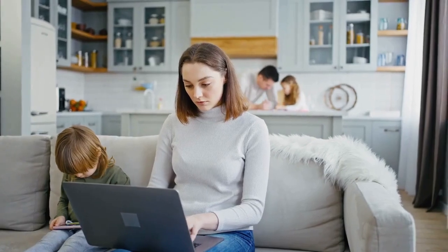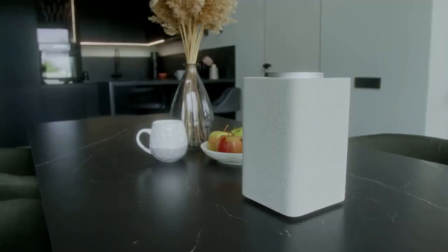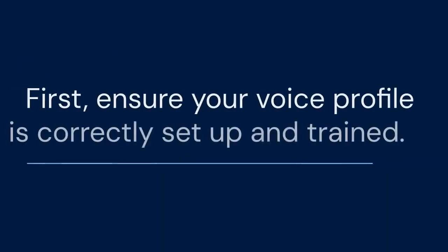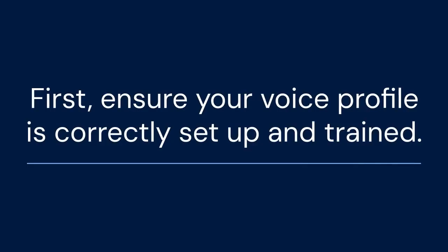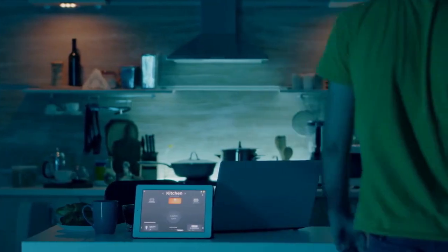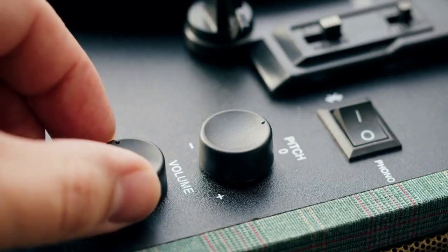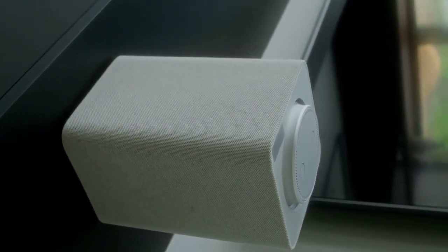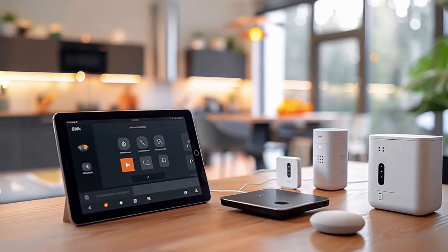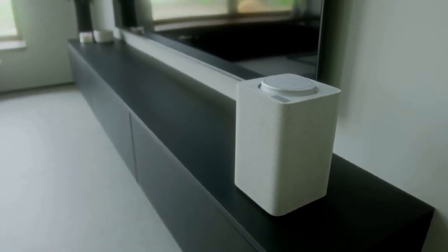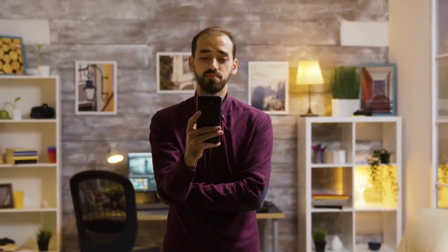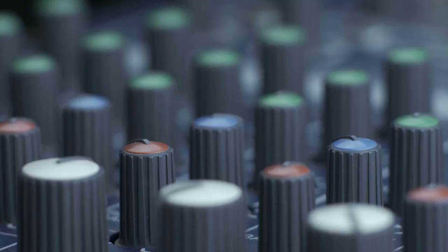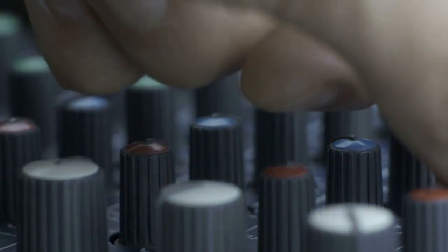What if Alexa still misunderstands you or responds to other voices? There are a few things you can try. First, ensure your voice profile is correctly set up and trained. Retrain your voice if necessary. Ambient noise can also interfere with Alexa's voice recognition, so try to reduce background noise when speaking to Alexa. Consider the placement of your Echo device — make sure it's not too close to a TV or other sources of noise. You can also adjust Alexa's sensitivity to voice commands, a setting usually found in the device settings within the Alexa app.